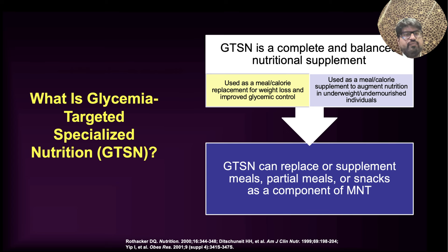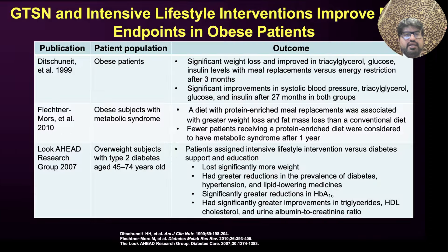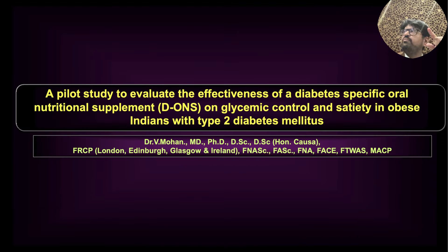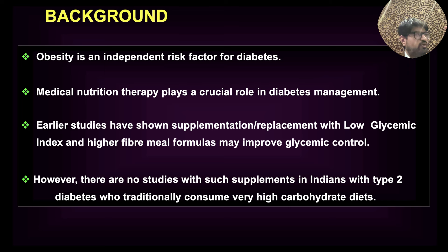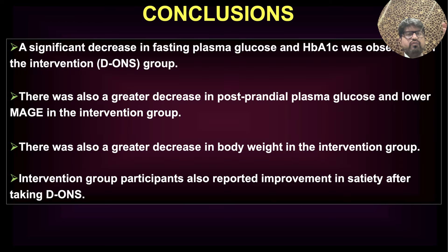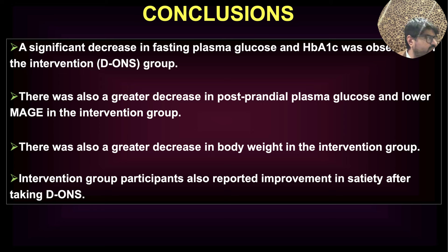There is now a study done in India as well. This is a study done by Dr. V. Mohan, looking at diabetes-specific nutrition and satiety in obese Indian type 2 diabetes patients. What they found was that diabetes-specific nutrition reduced HbA1c, reduced overall fasting glucose, and showed greater reduction in post-prandial glucose. There was also greater reduction in weight in the intervention group without additional problems.